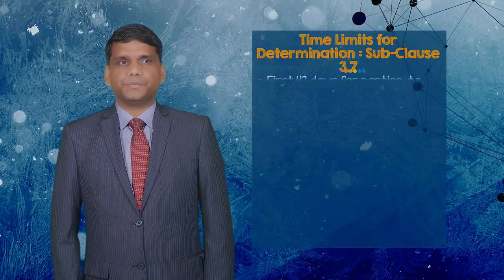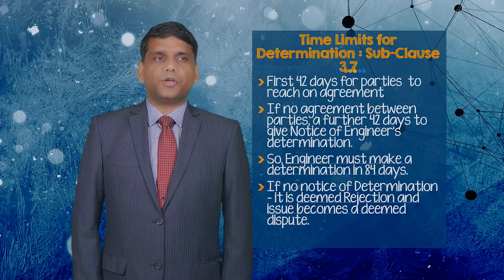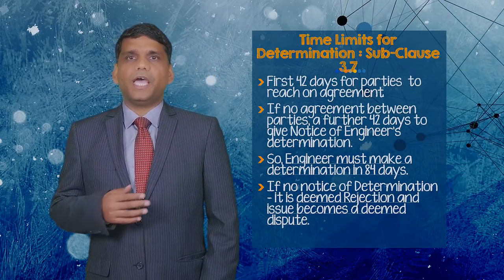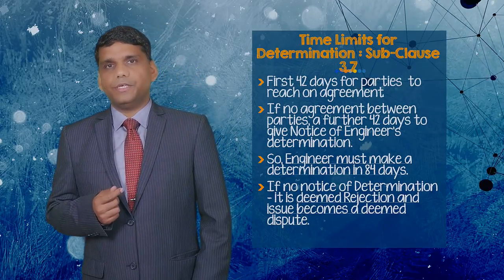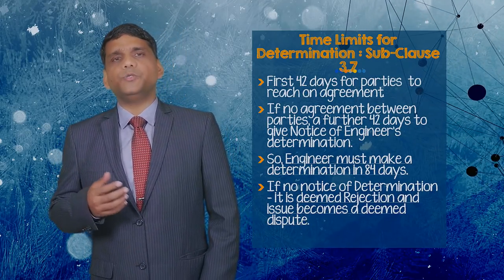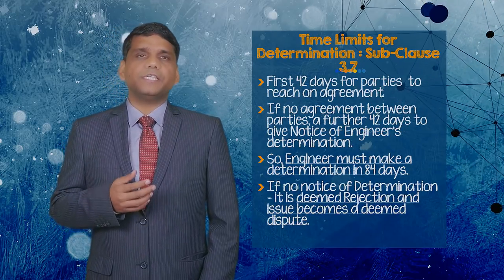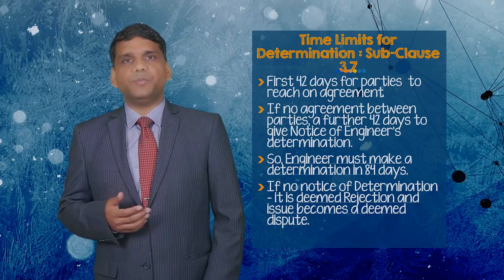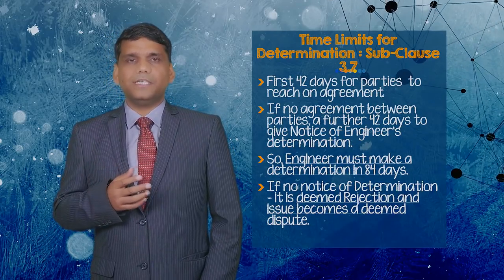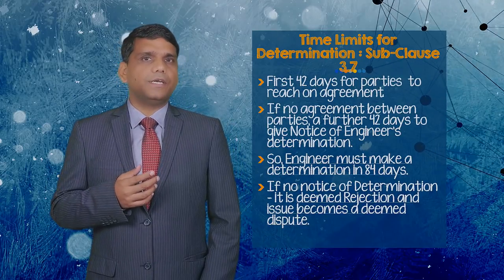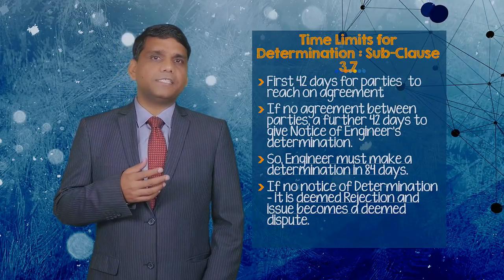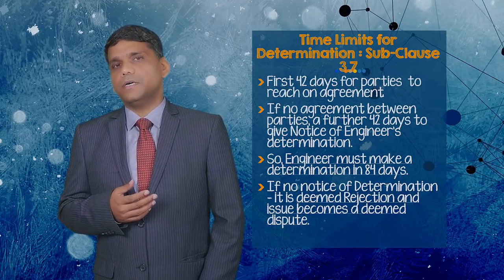Let us talk about time limits for determination under sub-clause 3.7. The engineer is required to act neutrally while making determination. The parties have the first 42 days to reach an agreement through consultation with the engineer jointly or separately. If the parties are unable to reach an agreement, the engineer has a further 42 days to make a determination and issue a notice. So in all practicality, the engineer has 84 days to make its determination. If no notice of determination is issued by the engineer, it is deemed a rejection and the issue becomes a deemed dispute.